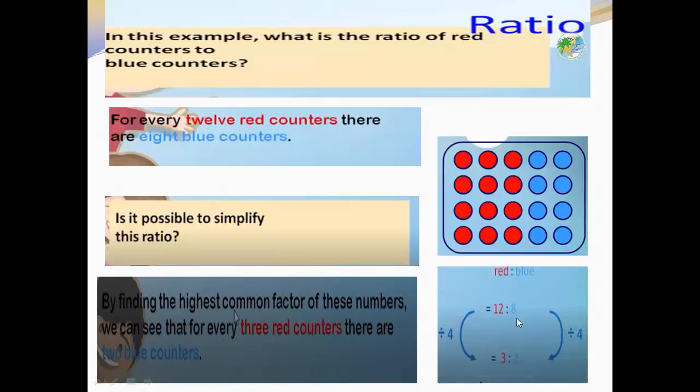Red to blue: twelve to eight. Divide by four. Twelve divided by four equals three. The ratio simplifies to 3:2.